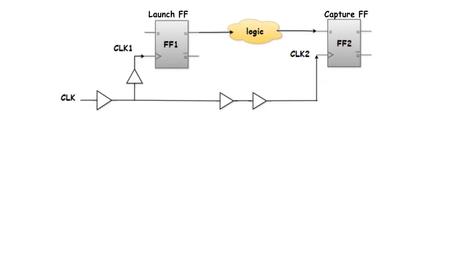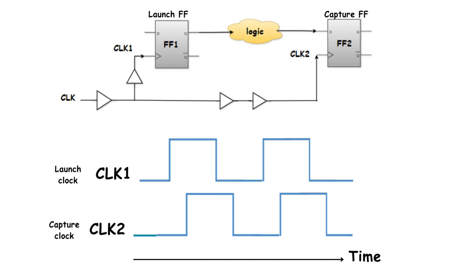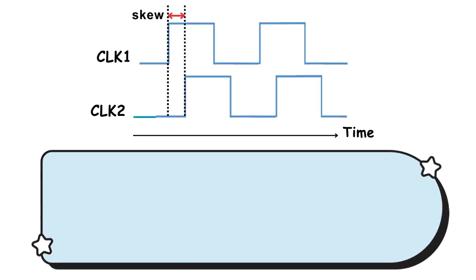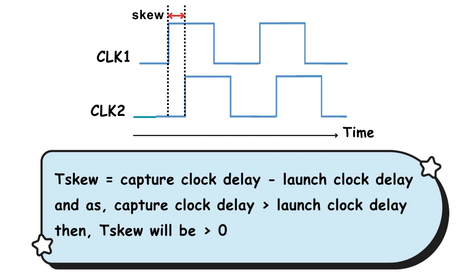For example, in this case, the capture clock arrives after the launch clock, introducing a delay at the destination compared to the source. So according to the skew equation, and as capture clock delay greater than launch clock delay, then t_skew will be greater than zero, results in a positive skew.